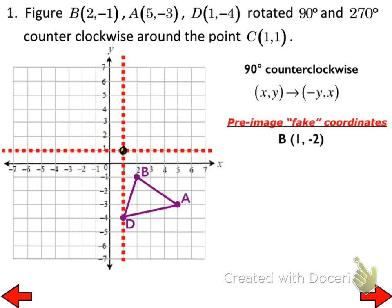So to use the counterclockwise rotation about the origin rule, I have to use my fake coordinate system. I already asked you where B was — it is at (1, -2) in the fake coordinate system. One to the right and two down. Go ahead and find D and A in the fake coordinate system — write these pre-image fake coordinates down. D is (0, -5), and A is (4, -4).